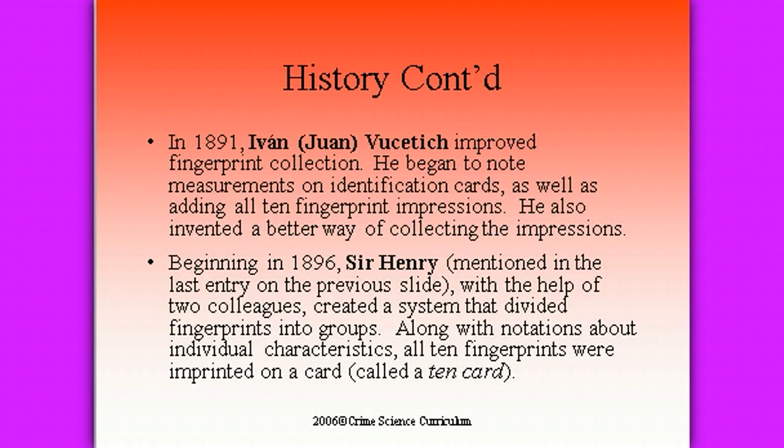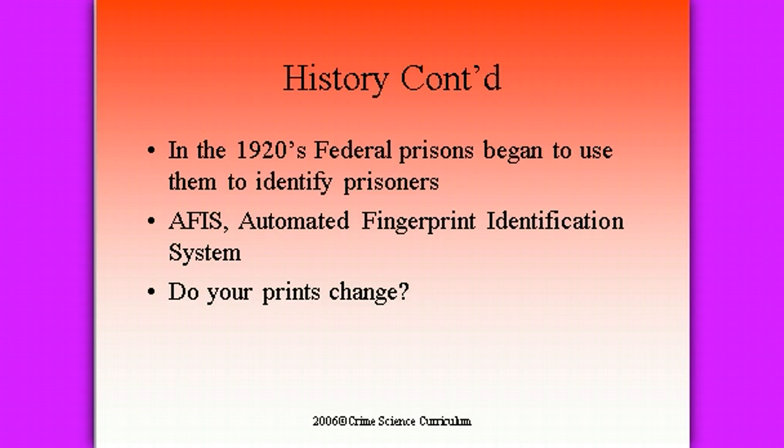In the 1920s, federal prisons began to use fingerprints to identify their prisoners. With that, they developed AFIS — the Automated Fingerprint Identification System. There's a video on the webpage about AFIS; it's a fairly short YouTube video. Take a moment after our notes today and watch that video to learn a little bit more about AFIS.